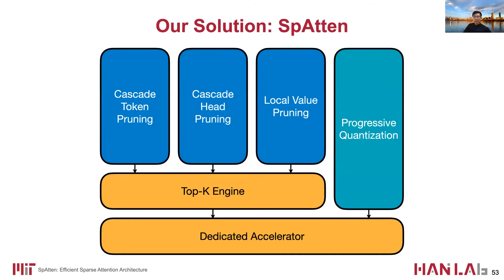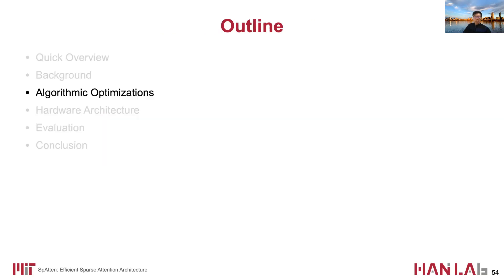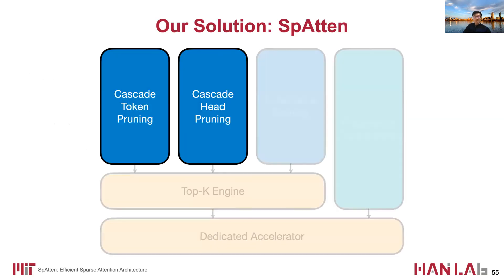Therefore, in order to accelerate attention, we propose Spartan, an algorithm-hardware co-design. We leverage pruning and quantization opportunities to reduce computation and memory access, and design specialized hardware to accelerate the complex data movements. We first introduce Spartan's algorithmic innovations, starting with cascade token and head pruning.